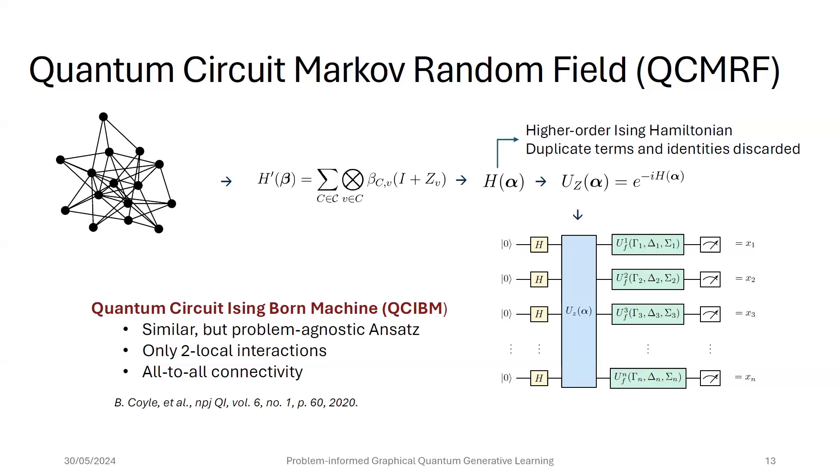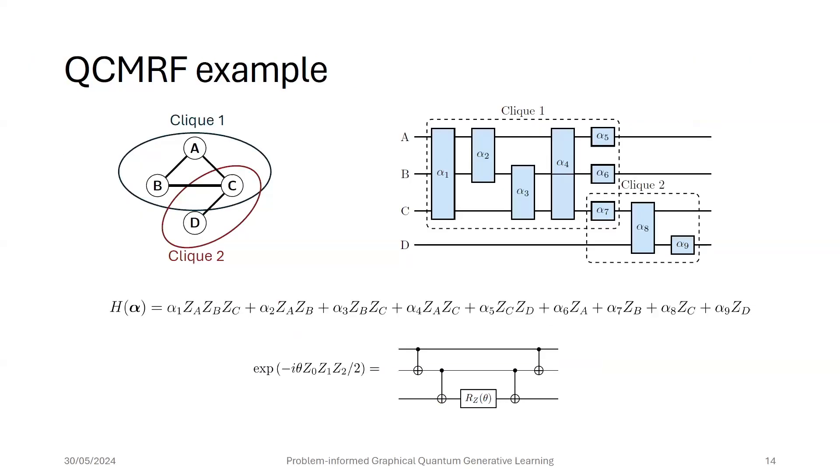Now, just to look at a simple example, going back to that four-node graph, where we have two cliques, the corresponding Hamiltonian can be written in this form, where we have three, two, and one-body terms. And the exponential of each of these terms can be implemented with a linear number of CNOT gates and a single one-qubit rotation gate. And so, the final UZ operator would take this form, where those are the two cliques.